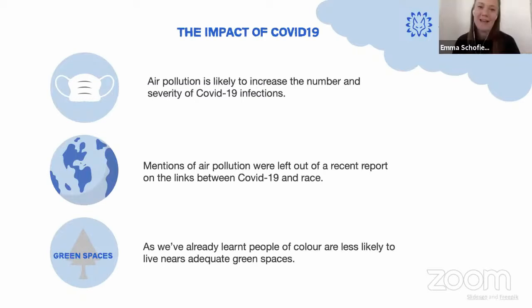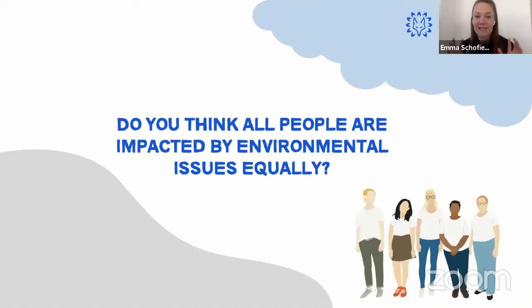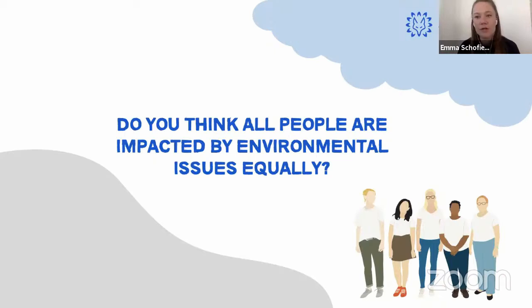Let's revisit the question we posed at the beginning. Has anyone changed their answer, or had it confirmed? We can see how people are disproportionately affected. Some audience answers: 'Poor and vulnerable people are more impacted and less able to adapt, and those who have contributed the least are impacted the most.' 'Some rich countries have enough money to ship their rubbish abroad and consume more.' 'Young people and the poor are desperately affected by ecological problems.'